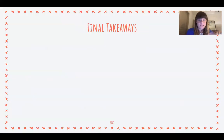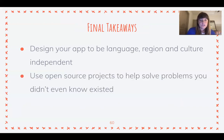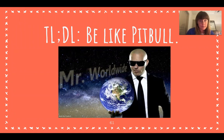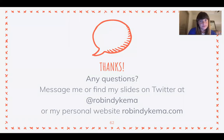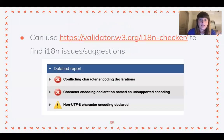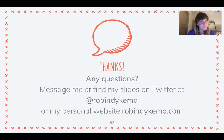In conclusion, the final takeaways: design your app to be language-, region-, and culture-independent; use open source projects to help you solve problems you didn't even know existed; and keep in mind that globalizing means bigger markets, more inclusiveness, and better code that is extendable and easier to manage. The TL;DR is to be like Pitbull — Mr. Worldwide. That's all I have for you today. If you want a copy of these slides I'll be posting them on my Twitter or website, and I have resources if you want to look further into these topics. Thank you all for listening — I hope you enjoy the rest of the conference!